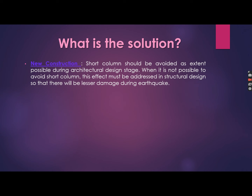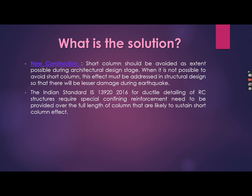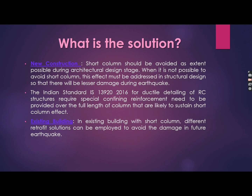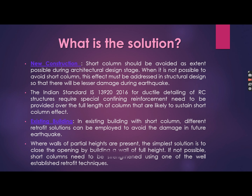Solutions to reduce or avoid the short column effect: For new construction, short columns should be avoided as much as possible during the architectural design stage. When it is not possible to avoid them, the effect must be addressed in the structural design to minimize earthquake damage. Indian Standard IS 3920:2016 for ductile detailing of RCC structures requires special confining reinforcement to be provided over the full length of columns likely to experience the short column effect. For existing buildings, the simplest solution where partial-height walls are present is to close the opening by building a full-height wall. If that is not possible, short columns need to be strengthened using one of the well-established structural solutions.